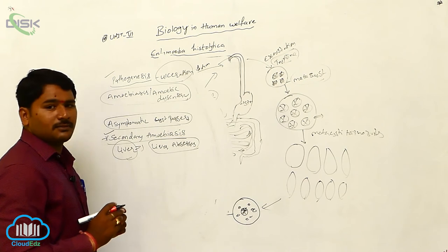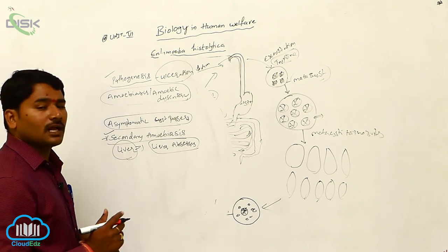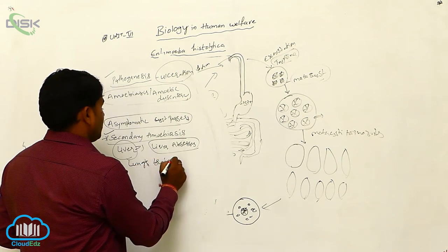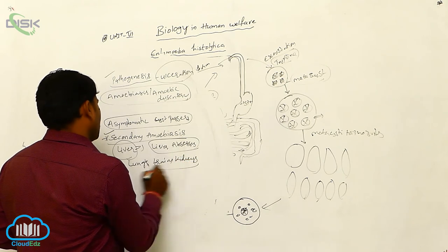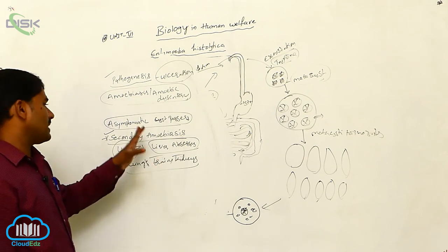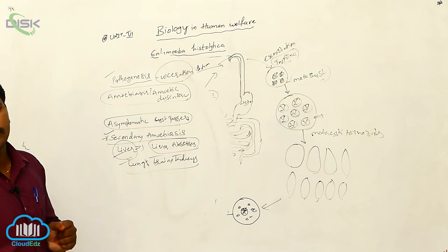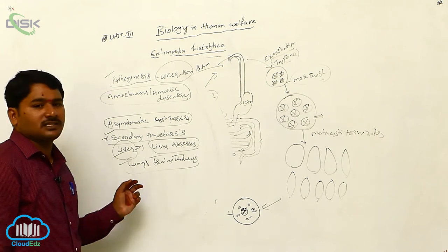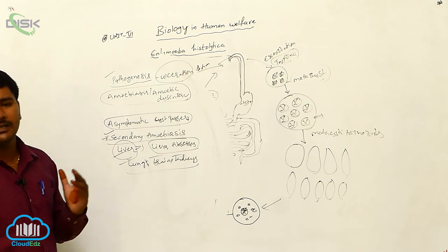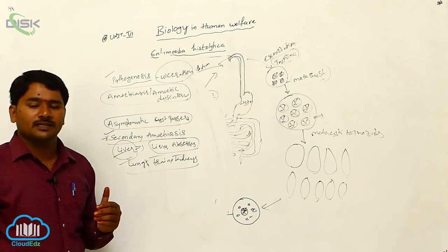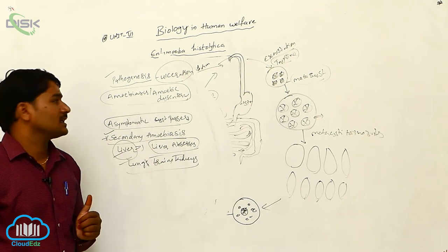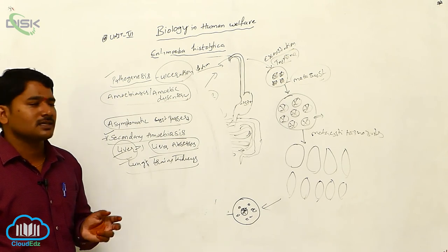Liver abscesses means the liver is damaged. Other than the liver, some vital organs are also damaged — especially the lungs, brain, and kidneys. This damage to liver, lungs, brain, and kidneys due to trophozoite infection is called secondary amoebiosis. In primary amoebiosis, the mucosa and submucosa are damaged by histolysin, blood and debris come outside, and through fecal matter blood and mucus are discharged.